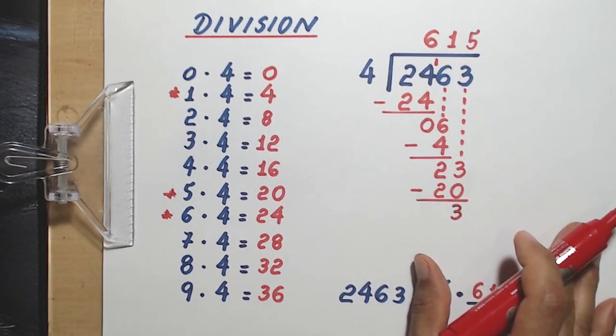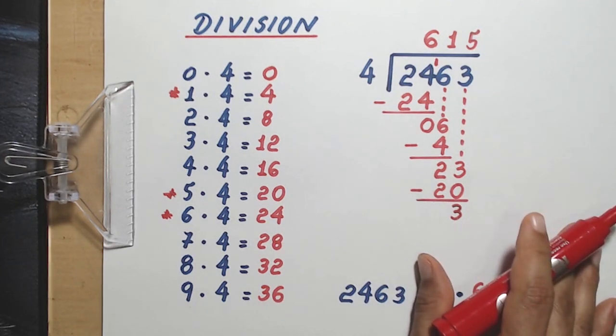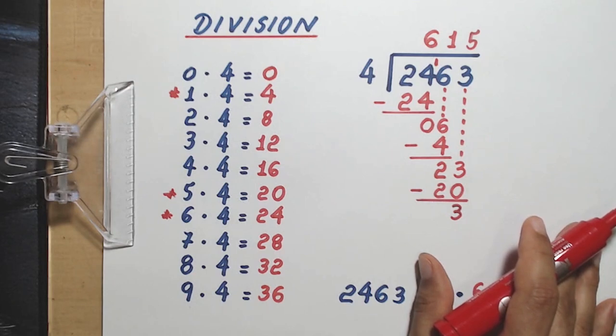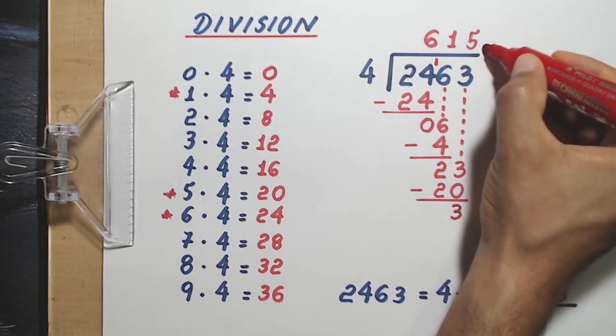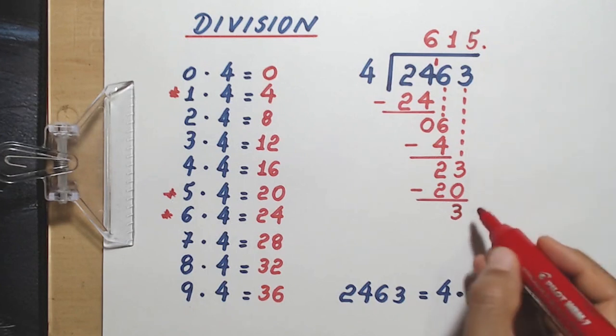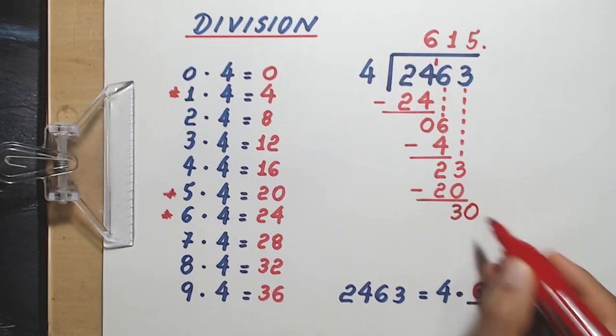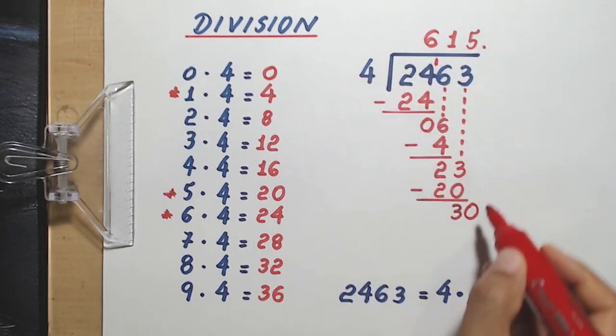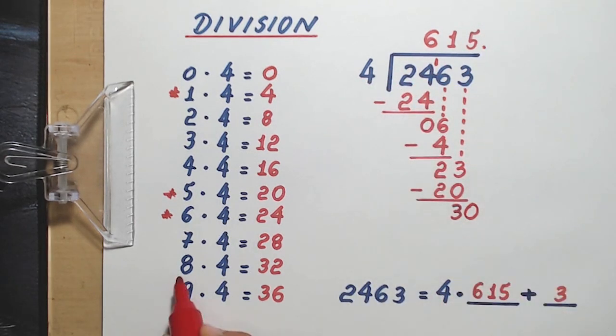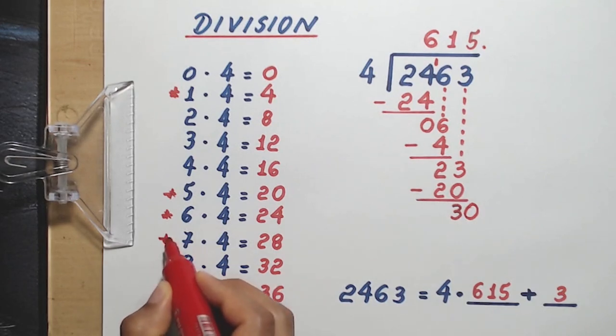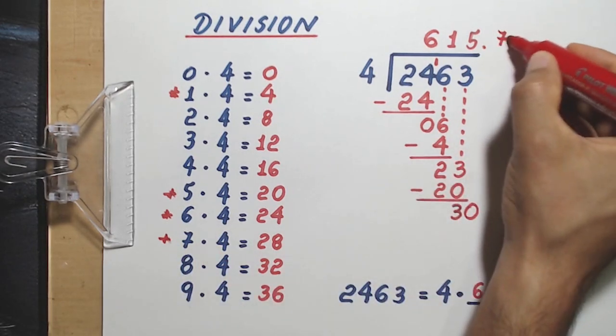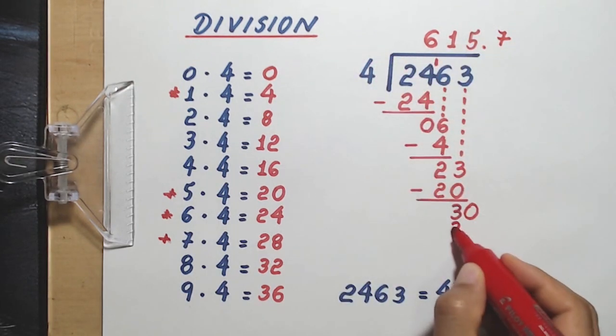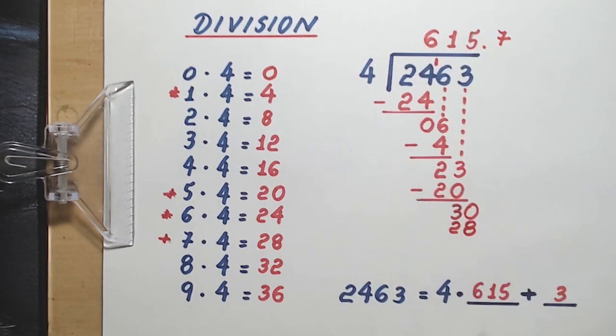But what if you want to continue with the division? You put the decimal point here. Since there is no digit to bring down, you bring down 0. And you continue by asking the question, what number do you multiply by 4 to get almost 30? Notice that 8 times 4 is too much, so we go with 7 this time. I write 7 here. 7 times 4 equals 28. I write it here, and we subtract.